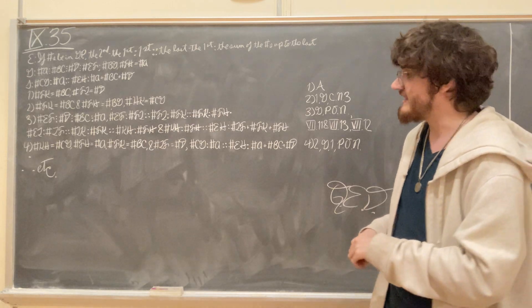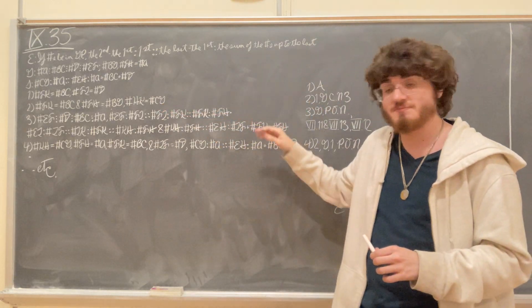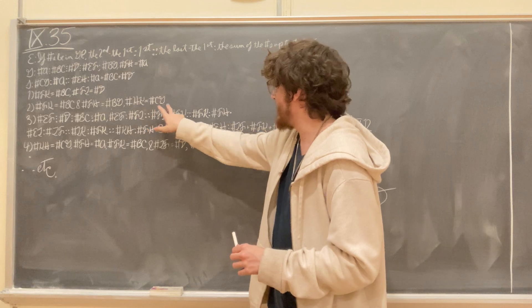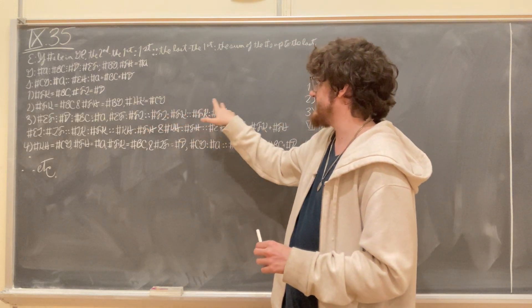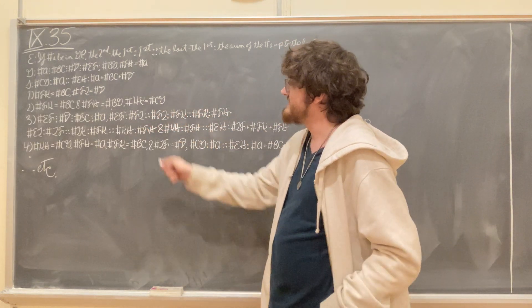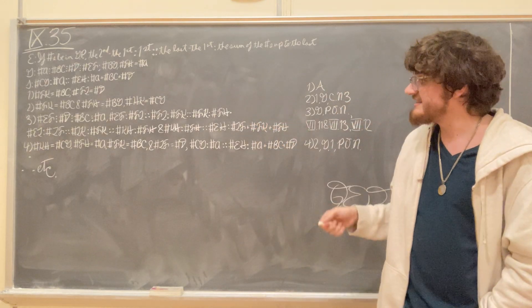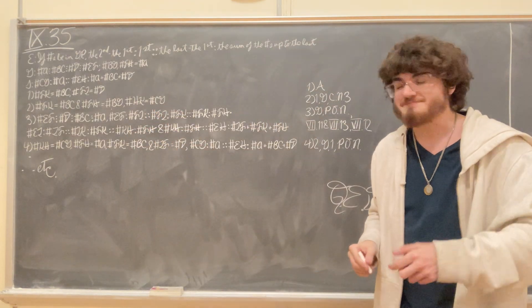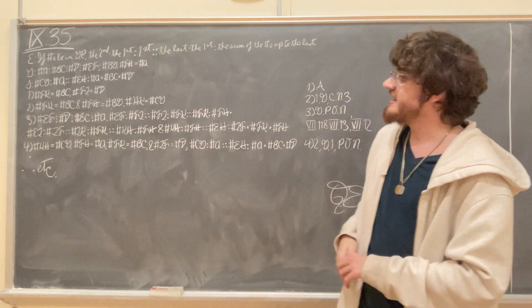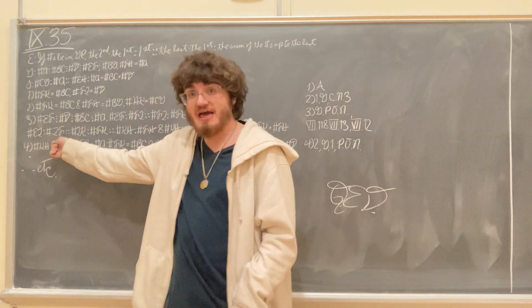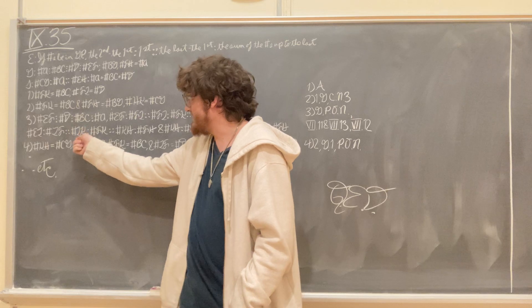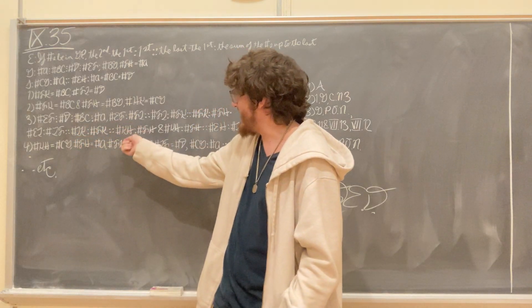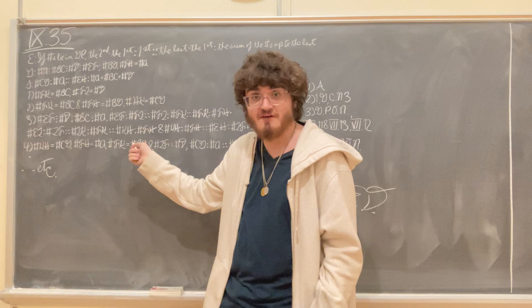We can do this exact same thing for the second half of this continued proportion. We can do the separando step for F,L to F,K as F,K is to F,H to get that L,K is to F,K just as K,H is to F,H. So in totality, what we're going to say is that E,L is to L,F, just as L,K is to F,K, and just as K,H is to F,H.